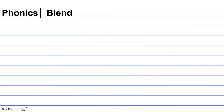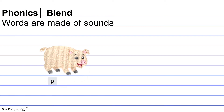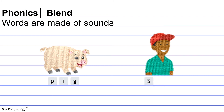Phonics. Blend. Words are made of sounds. As an example of this concept, check out these two examples. P-I-G: Pig. S-A-M: Sam. So as you can see, when we write, we use letters to show sounds in a word. For example, the letters P-I-G demonstrate the sound 'pig' when blended together, and the letters S-A-M make the word Sam.